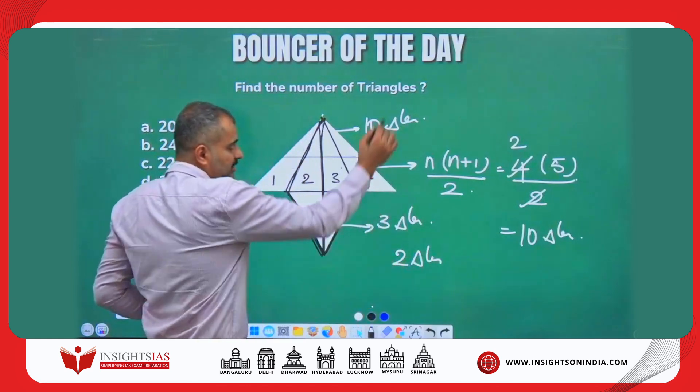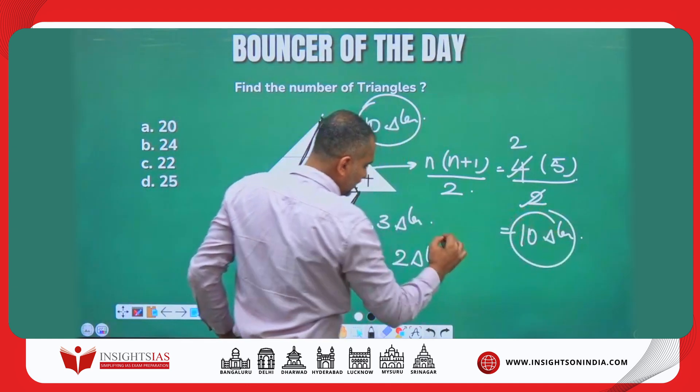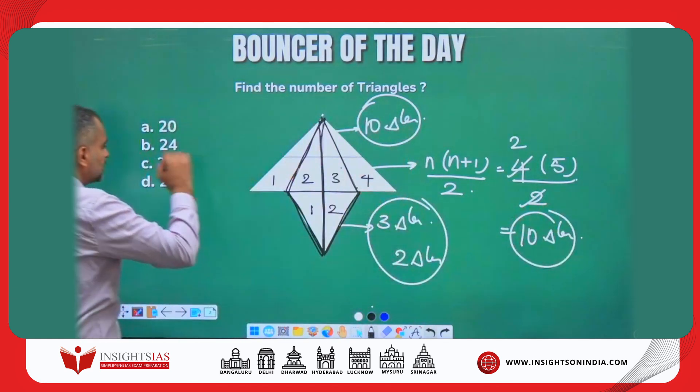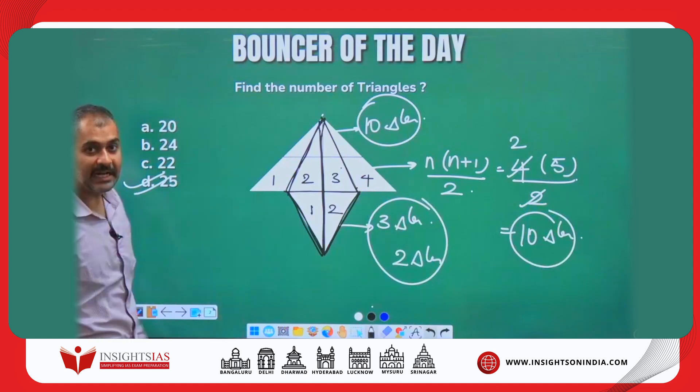How many triangles? 10 here, 10, and totally here 5. So totally that is 25 triangles.